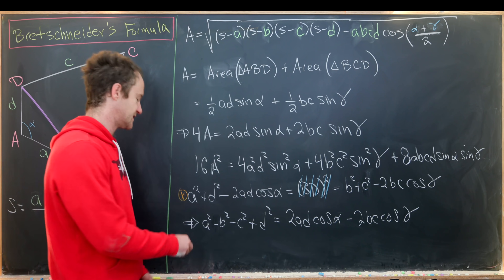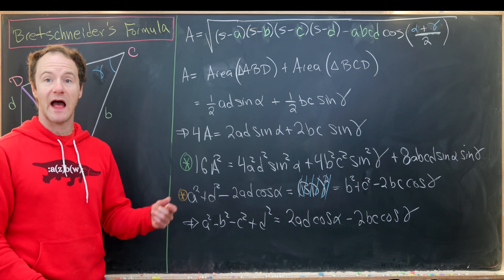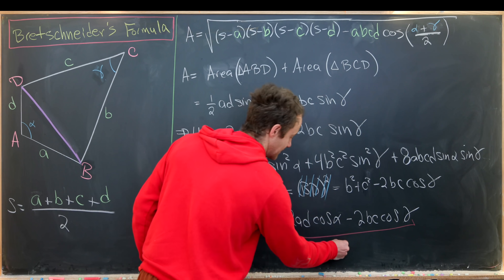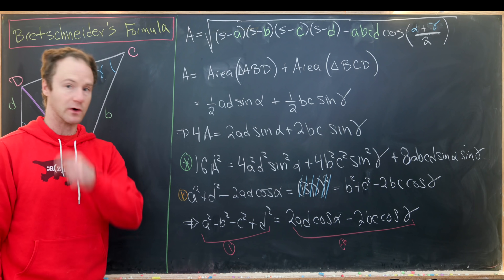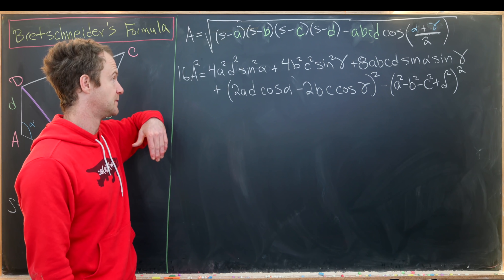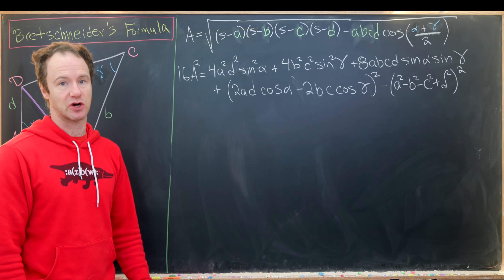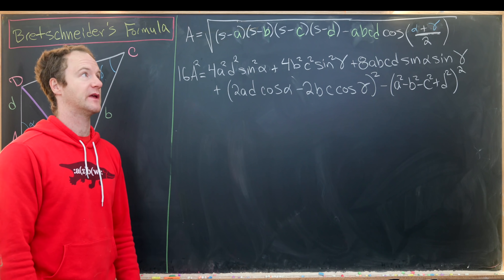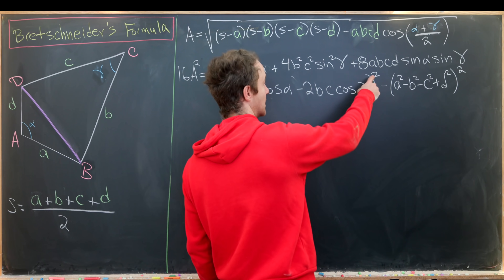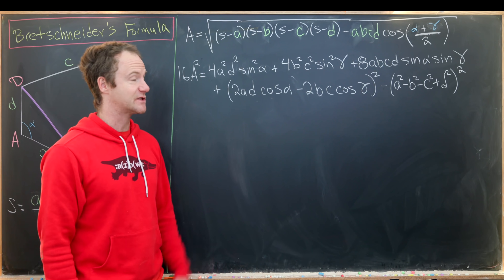On the next board, we take the 16A² equation and add and subtract the same term to the right-hand side. We subtract it in the form (a² − b² − c² + d²)² and add it in the form (2ad·cos(alpha) − 2bc·cos(gamma))². That is the square of the identity we just derived.